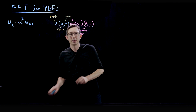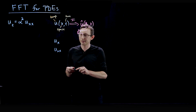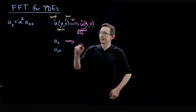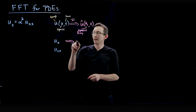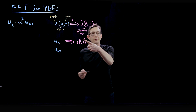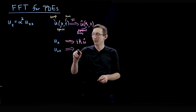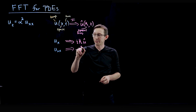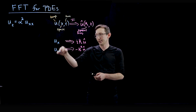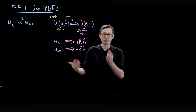The key observation is that if I have derivatives like u_x or u_xx, when we Fourier transform these, u_x becomes the complex number i times kappa times u-hat. Taking another derivative gives i squared kappa squared u-hat, which is minus kappa squared u-hat. So it's easy to compute spatial derivatives just by Fourier transforming and multiplying by kappa or kappa squared.